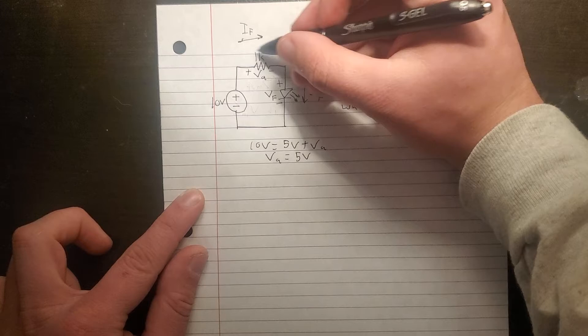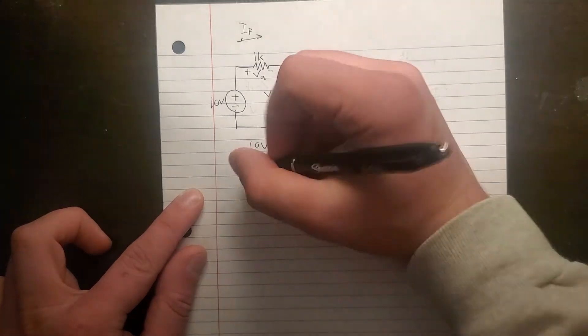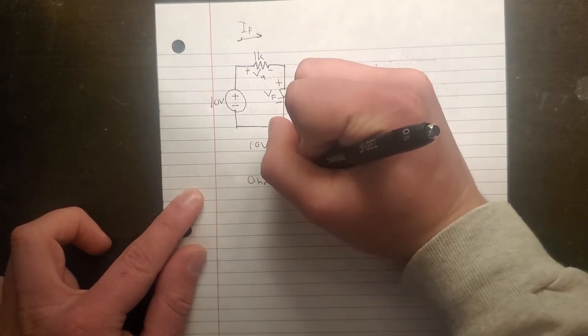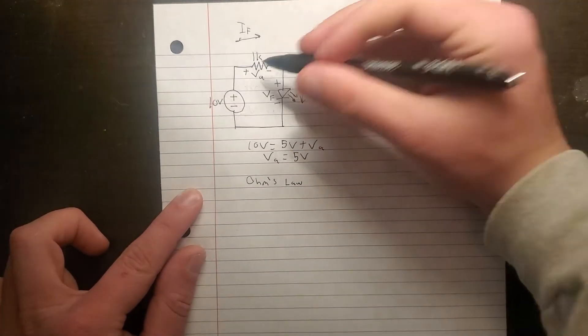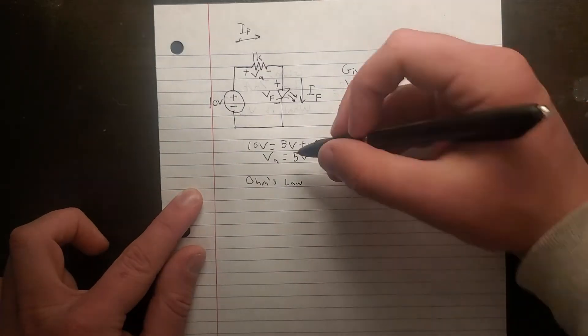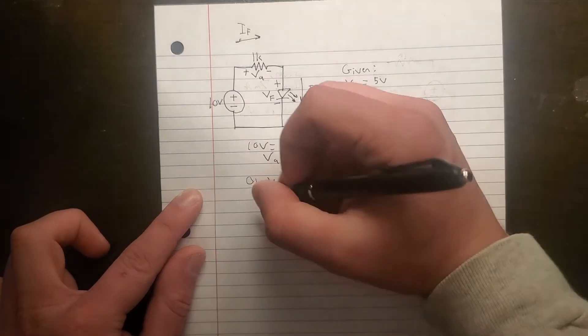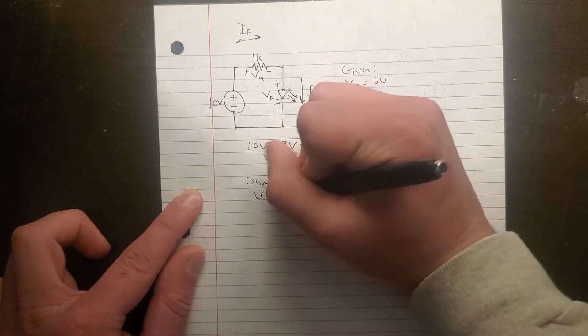Okay, now the current over this is the exact same, and we have everything here to do Ohm's Law. So you have the 1K Ohm resistor, 5V over it. So V equals IR.